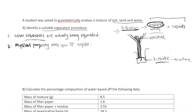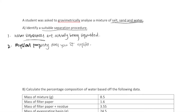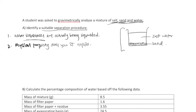To recap: the two main things to consider for separation technique questions are what substances are being separated and what physical property the technique exploits. For our mixture of salt, sand, and water: sand is insoluble in water so it collects at the bottom, while salt is soluble in water and dissolves to form salt water. So our mixture consists of salt water with sand resting at the bottom as a solid.